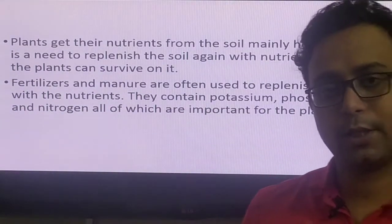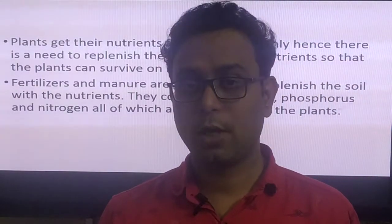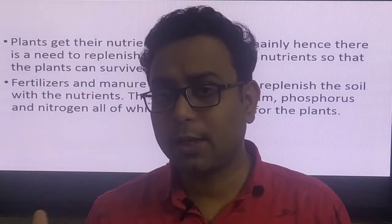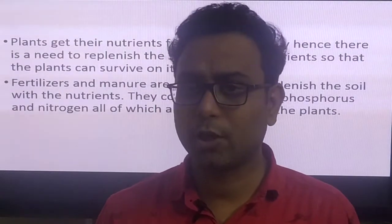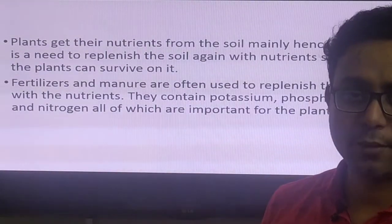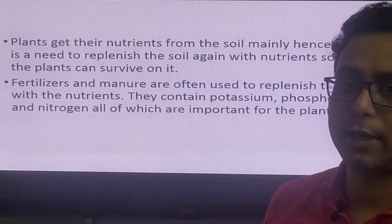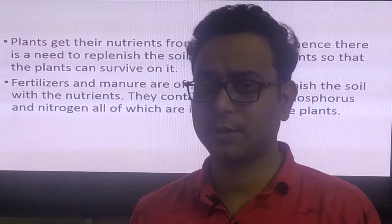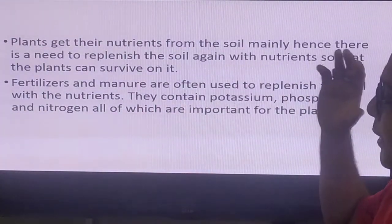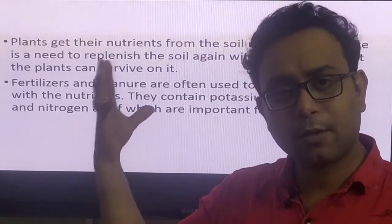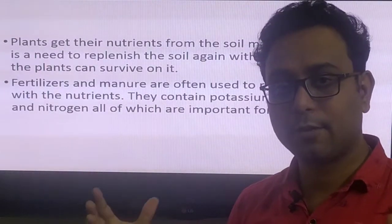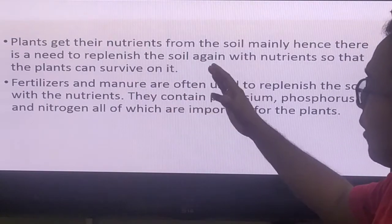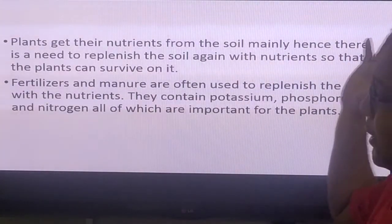Plants are autotrophic in nature, so they can produce their own food. But when photosynthesis is happening, water is required and some minerals are also required — why? Because minerals are required for enzymatic function and for plant growth. Important nutrients like nitrogen and phosphorus are most important. Plants get their nutrients mainly from the soil.